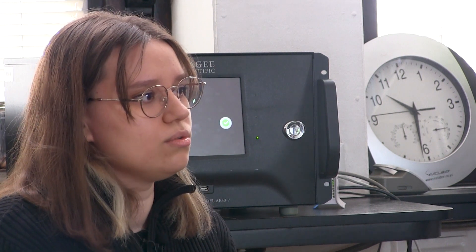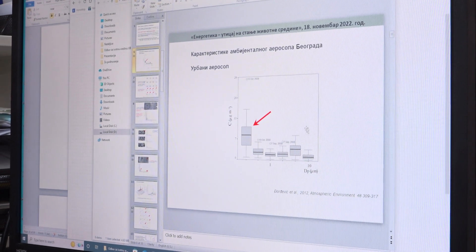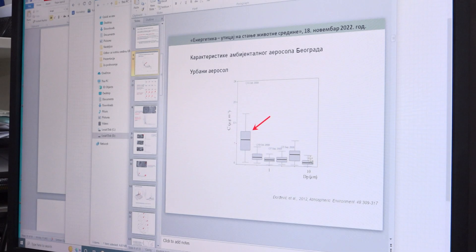Dok black carbon koji detektujemo od biomase dolazi od sagorevanja drveta, odnosno ogreva. Ljudi to koriste veoma često kod kuće. Takođe sagorevanja na poljima ili često se dešava i sagorevanje lišća u jesen. Mi s pomoću ovog uređaja možemo da razdvojimo koliki doprinos black carbon dolazi od sagorevanja fosilnih goriva i koliki doprinos dolazi od sagorevanja biomase.